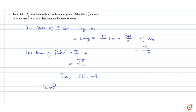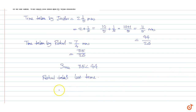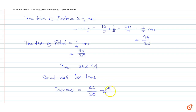Rahul takes less time. The difference in fractions is equal to 44 by 20 minus 35 by 20, equal to 44 minus 35 divided by 20, equal to 9 divided by 20 minutes.